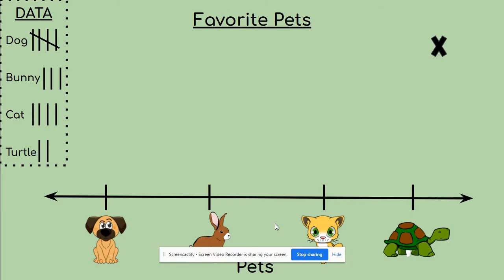Here is a blank line plot graph. Where I do see things that are the same is over here with our favorite pets title. We also have some data that was collected. You could look at data in different ways. This data was looked at as tally marks, which is totally fine. But when we put our information on our line plot, notice how it's going to be put on a number line.